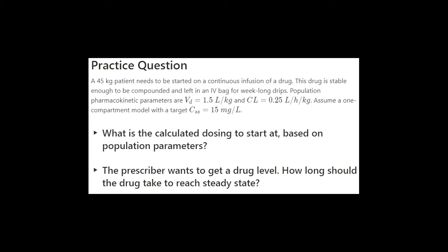We have a 45kg patient that needs a continuous infusion. This drug is able to be given over extended periods, days, and the population V and clearance are given. Our target concentration is 15 mg per liter, and we can assume a one-compartment model.